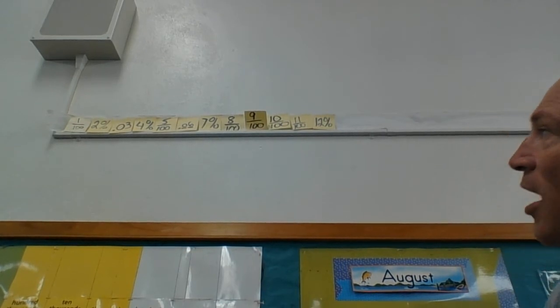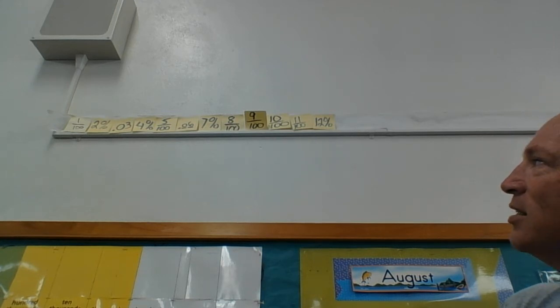And there's three ways naturally I can write that. I can write it as a percent, a fraction, or a decimal. Let's see, which one have I not done in a while? Oh, I don't think I've done a decimal in a while.